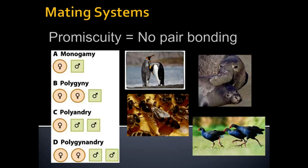In a monogamous system there's a close social relationship between the male and the female, and emperor penguins are a good example. If you're an emperor penguin and you have one of the other systems it really does not work out well, because two parents are required to successfully raise an offspring. In their environment, monogamy has been strongly selected for.